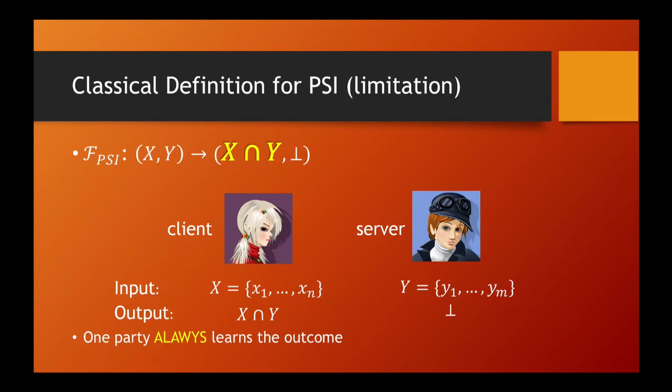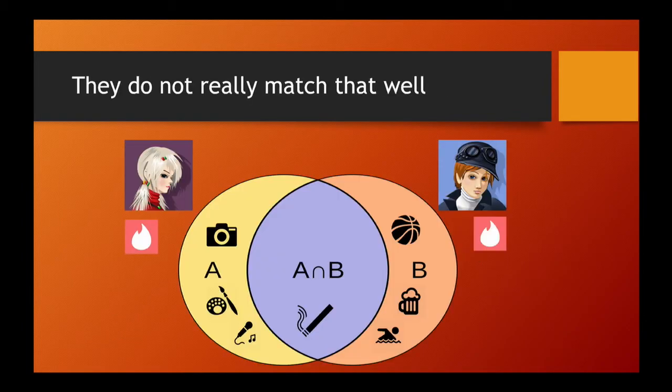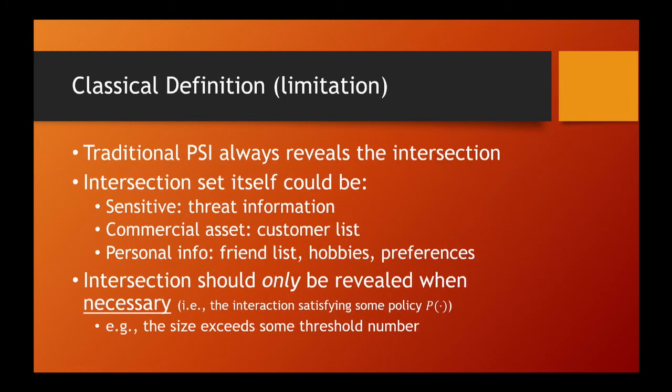The formalization of PSI is elegant. However, it has some limitations. We argue that in some applications, unconditionally revealing the intersection may not be desirable. Consider the matchmaking application: if Alice and Bob only share one or two common hobbies, they are not going to be friends eventually, and it is a compromise of privacy to reveal those common hobbies to a stranger.